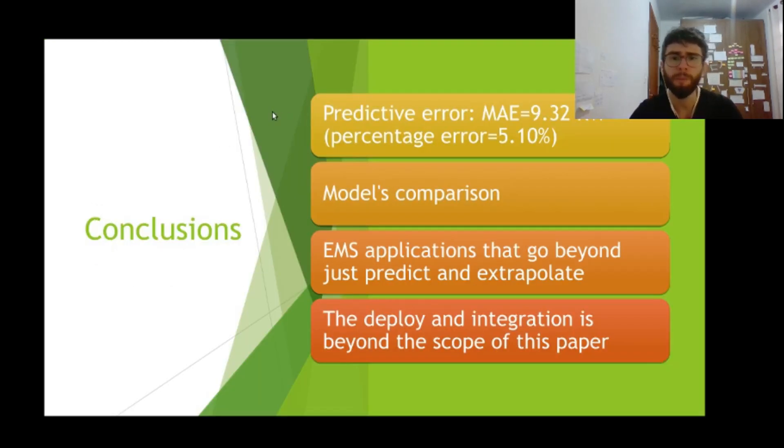So in this work, we developed a predictive model for the energy consumption of one specific building, and we can predict the energy consumption with an error of 5%, and this is a good result compared with other results in literature. And we compared several models in the task of predicting the consumption, and we analyzed the applications of this model in the context of energy management systems.